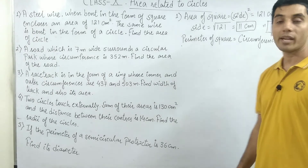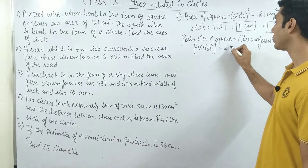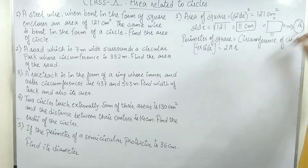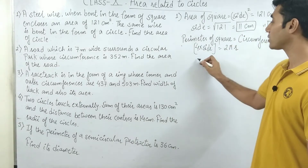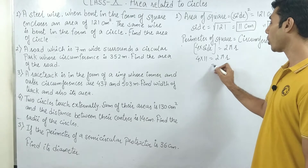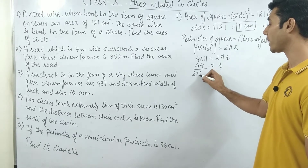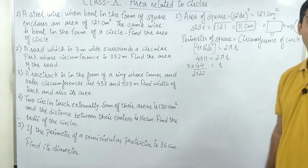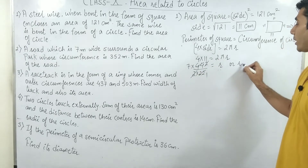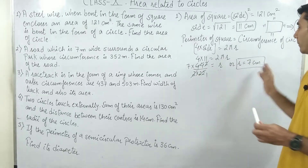The perimeter of the square is 4 multiplied by side, so 4 into side equals 2πr. The side was 11, so 4 into 11 equals 2πr, which gives r = 44 upon 2 into 22/7. After cancellation, r equals 7 cm. So the new circle that is formed will have a radius of 7 cm.